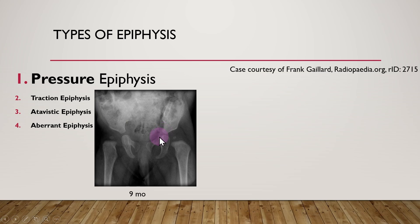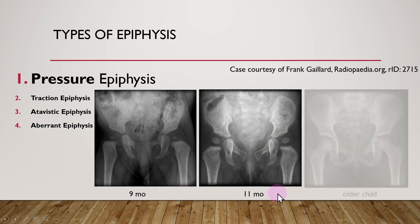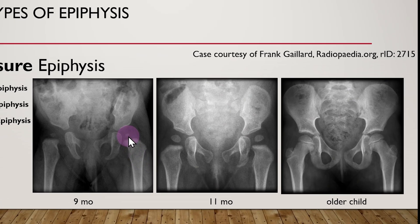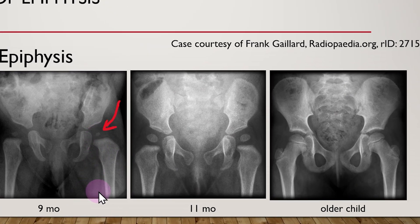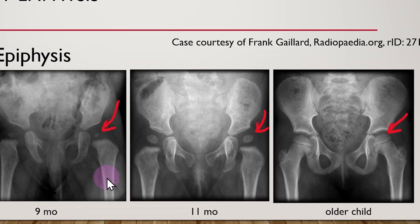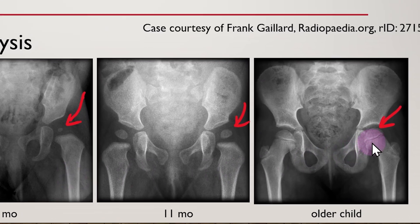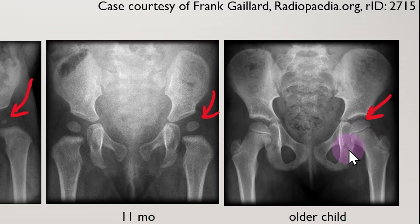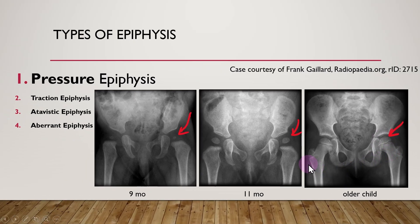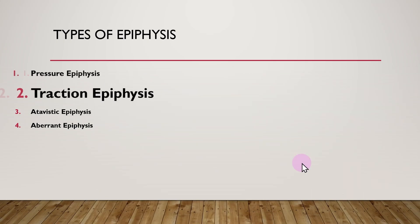Let us have a look at a series of X-rays in a young child of 9 months age, 11 months age, and an older child. You can see the location of the epiphysial center — the secondary ossification center — here, here, and here. In the last one you can see the clear formation of an epiphysial plate between this epiphyses and the metaphysis.